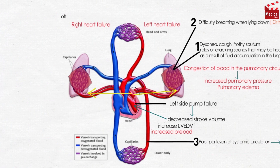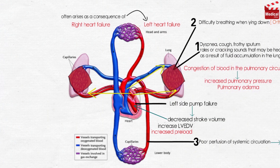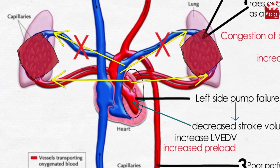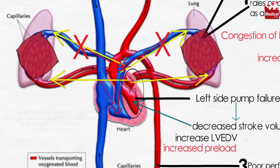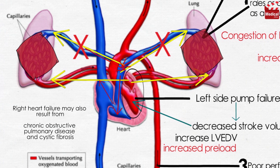Right heart failure often arises as a consequence of left heart failure. As a result of the increased pulmonary pressure that accompanies left heart failure, the resistance to blood flow from the right ventricle to the lungs is significantly increased. Over time, the increased workload on the right ventricle leads to dilation and eventual failure of the right heart. Right heart failure may also result from chronic obstructive pulmonary disease and cystic fibrosis.